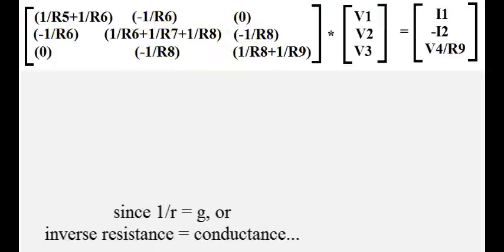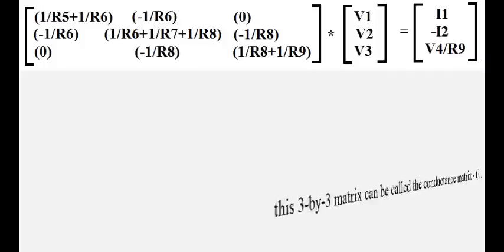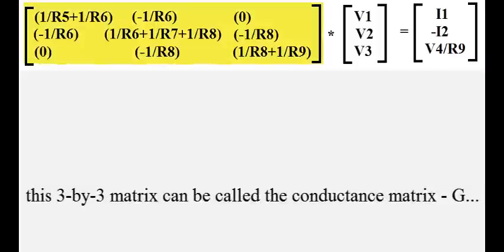Since 1 over R equals G, or inverse resistance equals conductance, this 3 by 3 matrix can be called the conductance matrix, G.